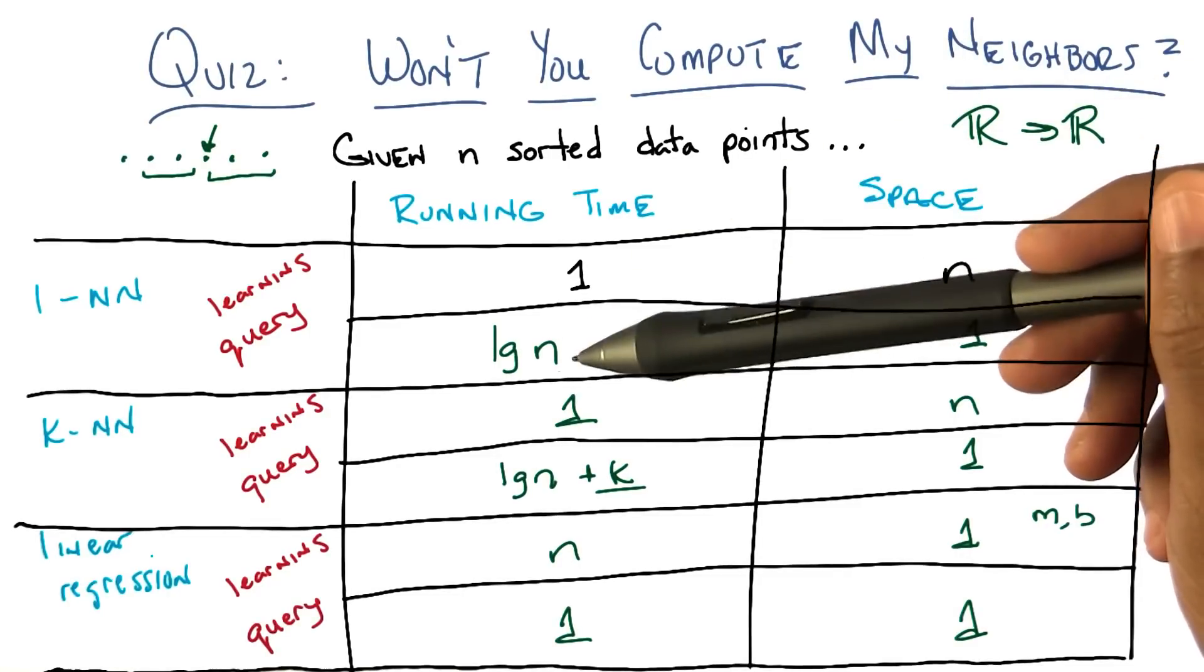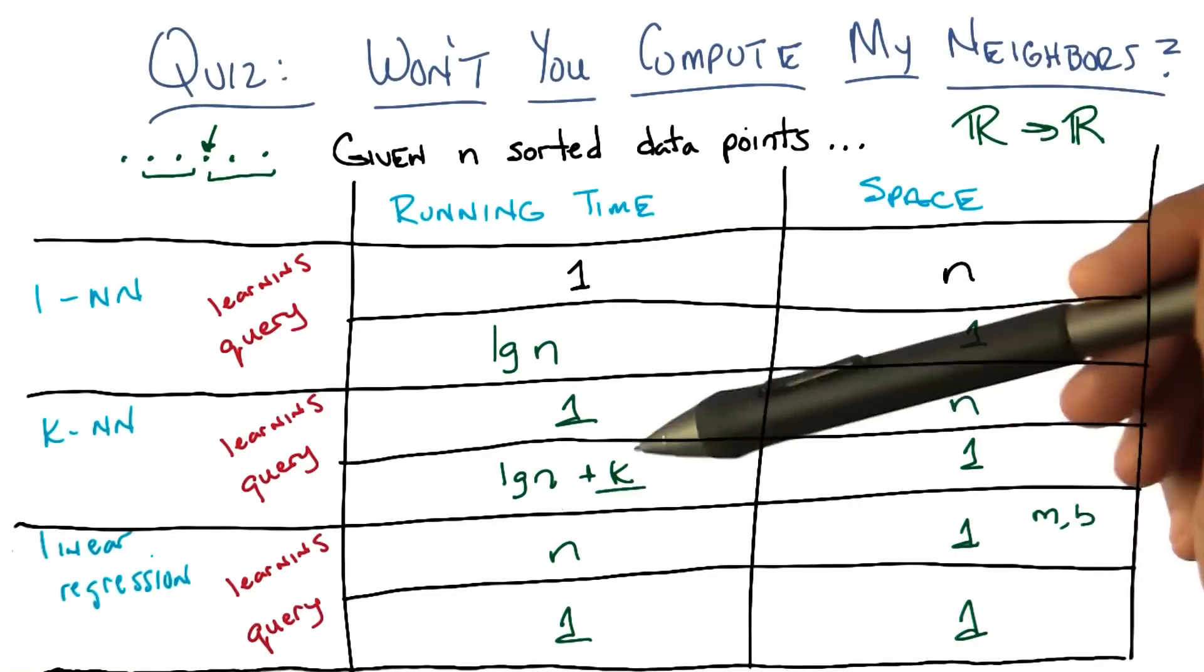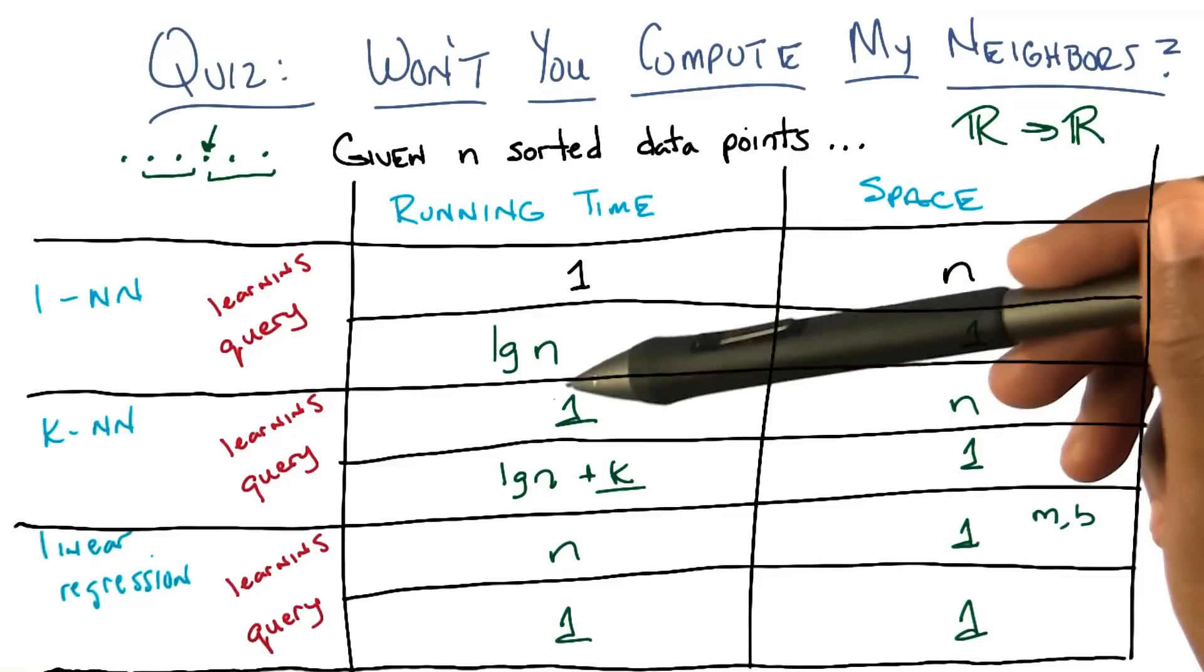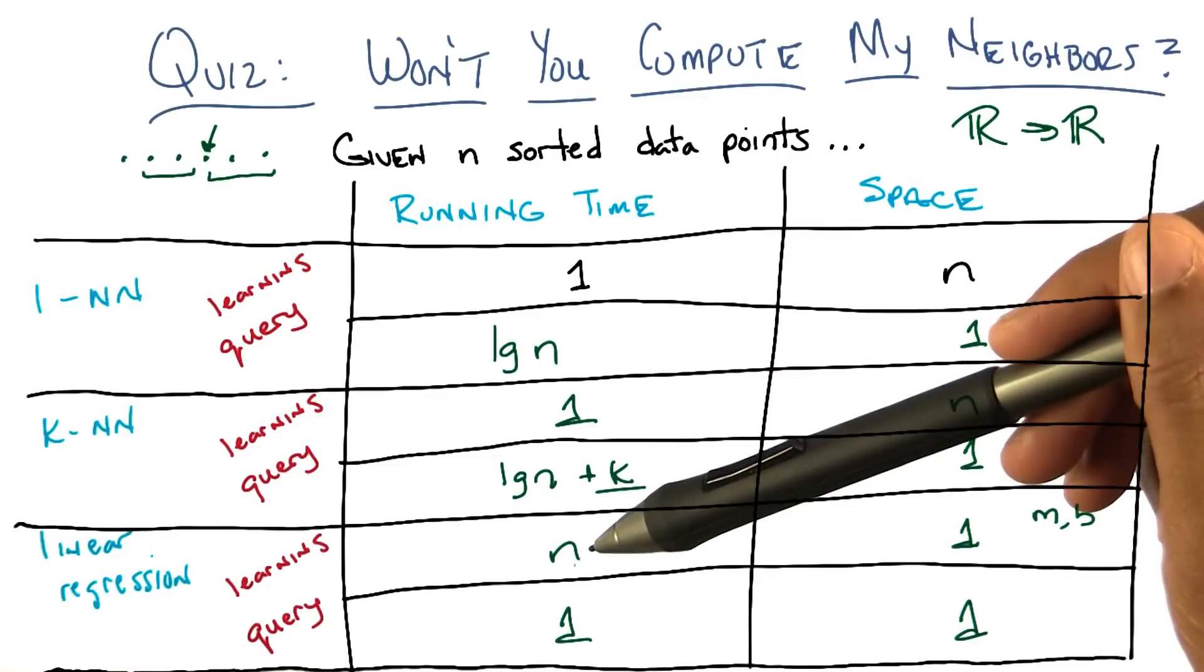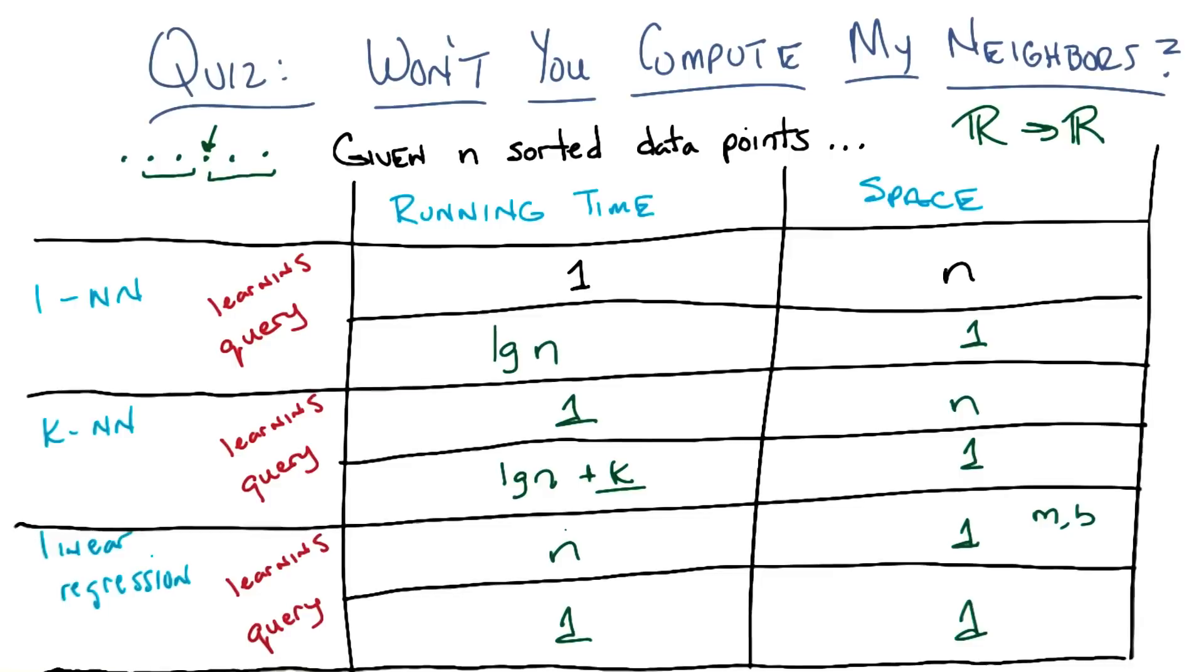So why would you care about that? Well, let's see. I'll point out something, which is though, even though we swapped out what was expensive in terms of time and what wasn't, you'll notice that it's only logarithmic at query time for these first two, but it's linear for the learning time in linear regression. So doesn't that mean that linear regression is always slower and worse? Well, not really. I mean, because we don't know how many times, we only have to learn once, but we could query many, many times. Right. Right. So I guess if we query more than, you know, in times, for example, it'll certainly be worse overall, in terms of running time. That's right. Okay.